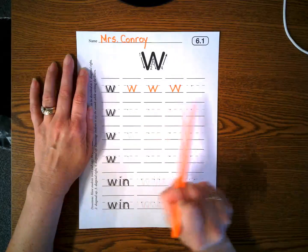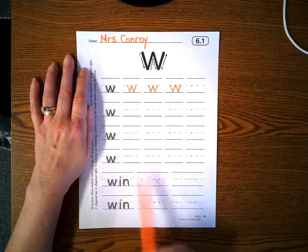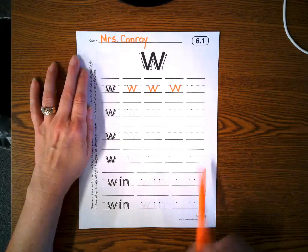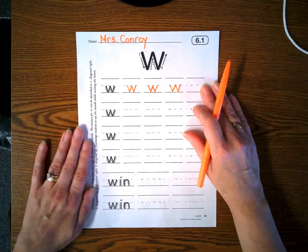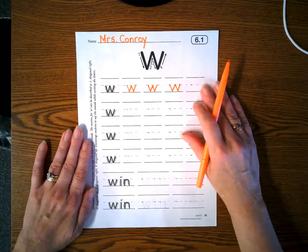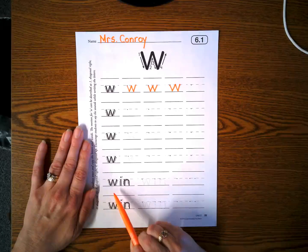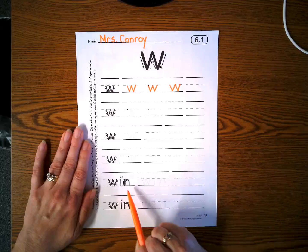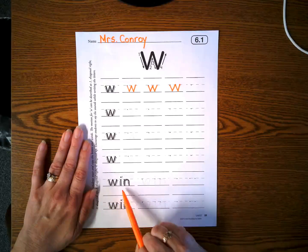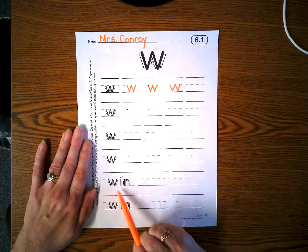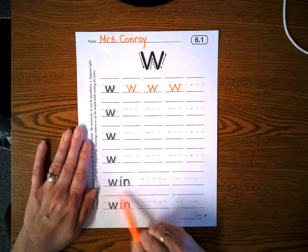After you finish writing all of these letter W's to here, you're gonna do this word. Let's stretch this word and see what it says. And we know that the letter W says w, I says i, n says n. W, i, n. Win. Win.